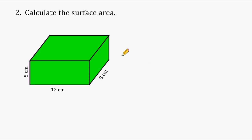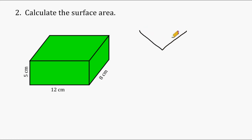For this problem, we have to find the surface area of a rectangular prism. One way I like to find the area of a rectangular prism is by doing something called the Y method. I draw what looks like a capital letter Y, and then I take my three dimensions and write them at the end of each line. So we have a 5, 8, and a 12, and it's really not important in which order you write them.